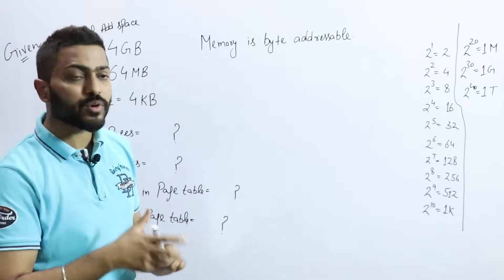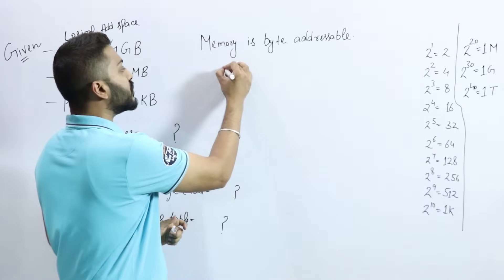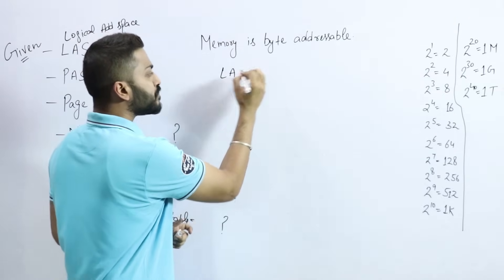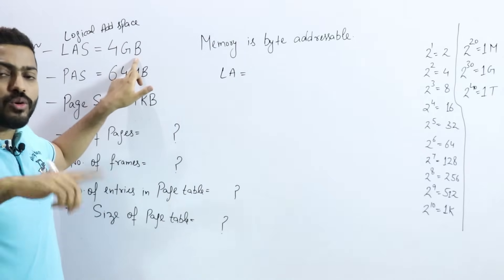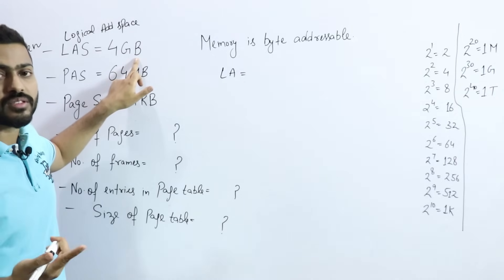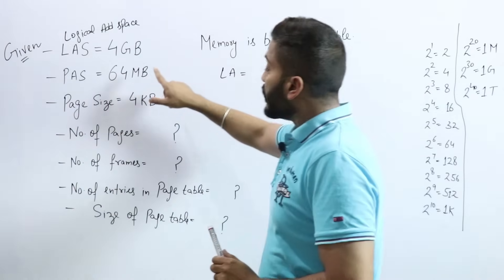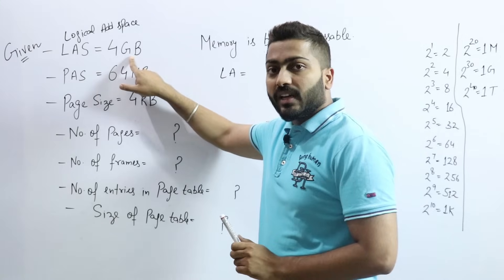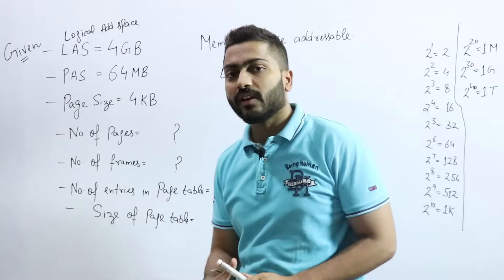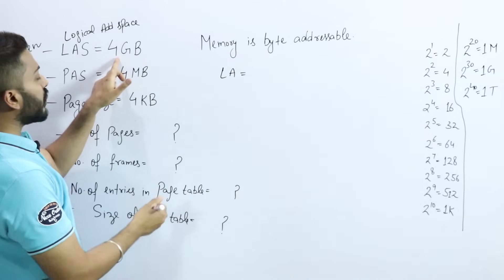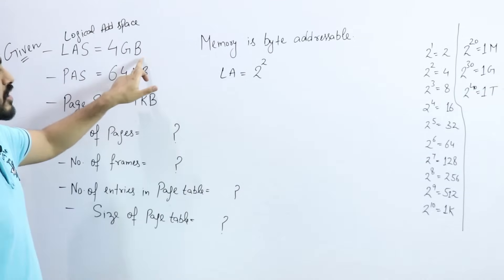Whenever logical address space is given, you can first convert the logical address space into a logical address (in bits). My logical address space is 4 GB — how many bits are needed to represent 4 GB? Just write all values as powers of 2. What is 4? 4 is 2 raised to power 2.